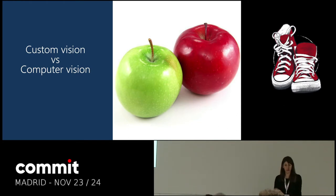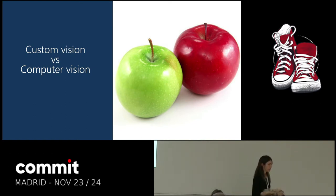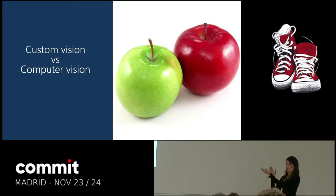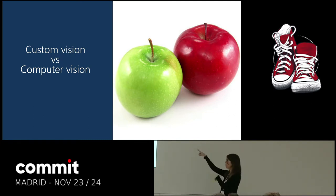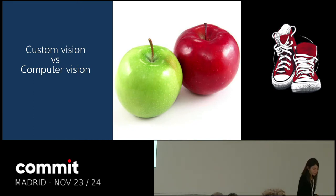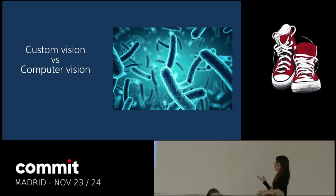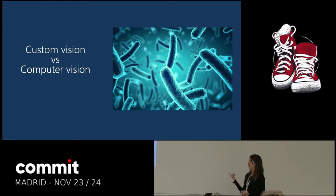When would you use Custom Vision versus Computer Vision? If you want to analyze images of apples and just know if there are apples in the image, you can call Computer Vision and it will tell you there are two apples, one is red, one is green, the background is white. But if your business is selling fruit, you might want to know what kind of apple each one is — you could use Custom Vision, tag them as Granny Smith and Red Delicious, and then your model will detect the type of apple, not just the color. Another example: in healthcare, if you have images of bacteria that are not common, you could use Custom Vision to detect the kind from images.